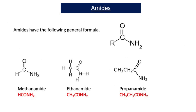Now in this video we're going to come across amides. Amides have the following general formula: an R group attached to a C double bond O and an NH2 group. The first three members of the amide family are shown here.